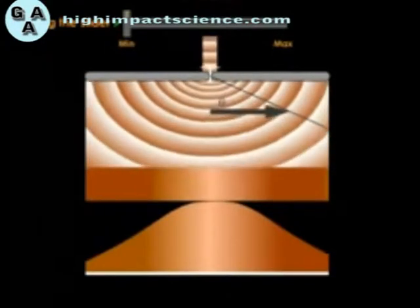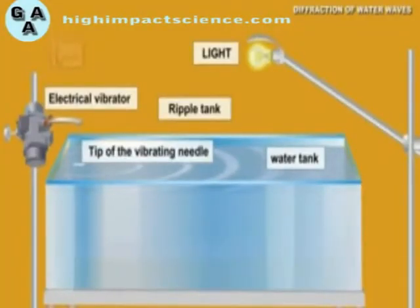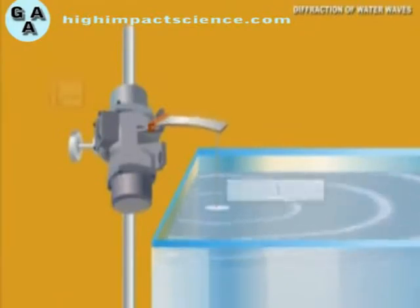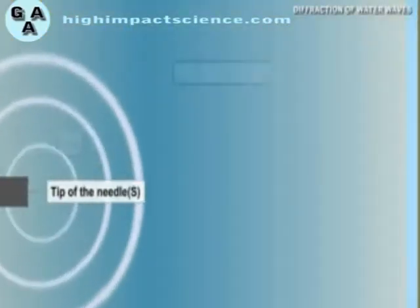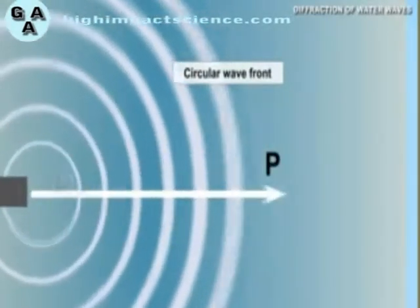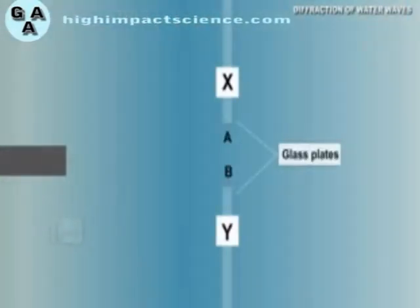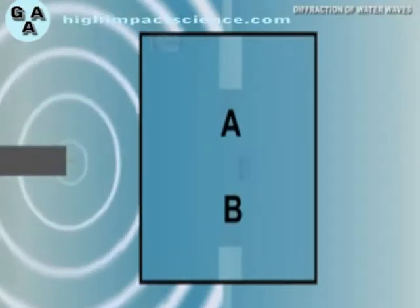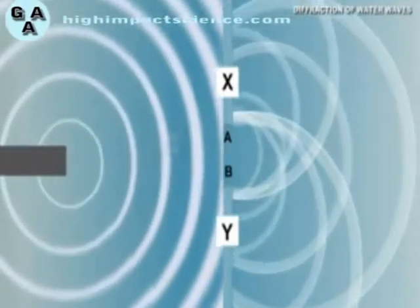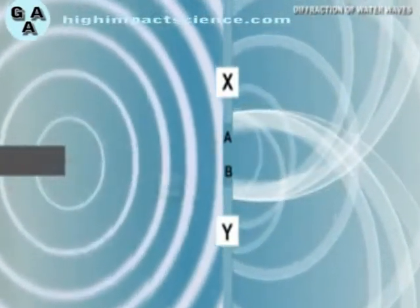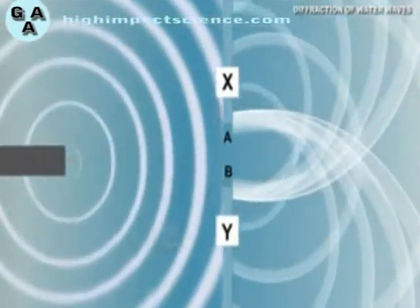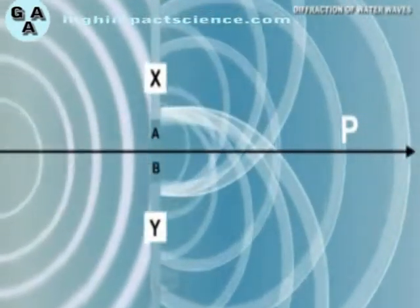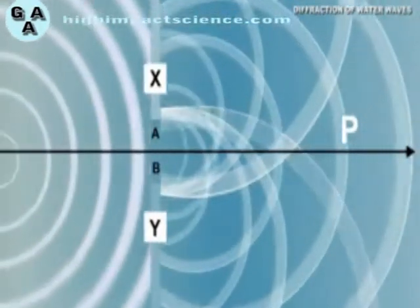Even circular waves exhibit diffraction. In a ripple tank arrangement, the tip of a needle connected to a vibrator produces circular waves. Two glass plates X and Y are placed in the tank with a gap between them, acting as an obstacle with an aperture. The circular waves passing through the aperture result in wave fronts that are circular in nature and spread out in all directions. The waves emerging from the aperture deviate from the original path and travel in new directions.